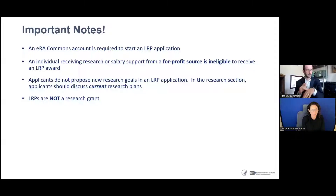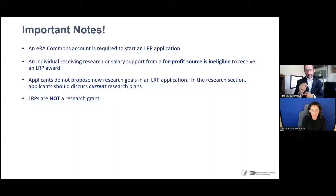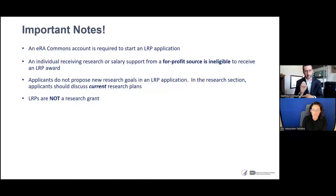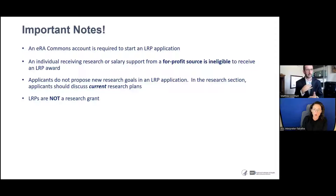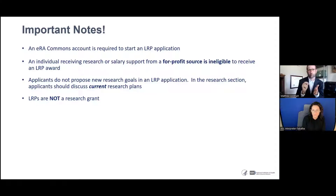Some important notes: an ERA Commons account is required to start the LRP application, available through ASSIST. We do not support LRP awards where income is from a for-profit source. Applicants do not propose new research goals in the application — in the research section, you should be discussing current research plans. Research projects from other grants are applicable. This is not a research grant; we are paying your financial student loans.